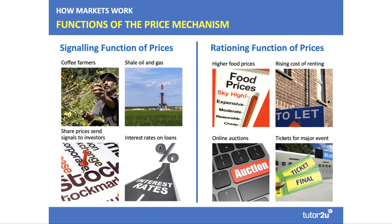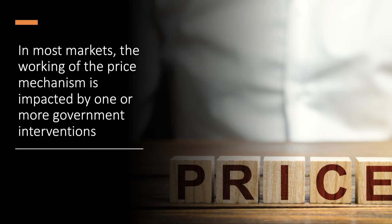Prices also ration scarce resources where demand outstrips supply. If there's a shortage of food, prices are bid up; if there's a shortage of shipping capacity in the global economy, the price of shipping goes up. Essentially, whether it's tickets for a major event, the cost of renting a house, or a product on an eBay auction, prices are bid up and only those with willingness and ability to pay are left with effective demand in the market system.